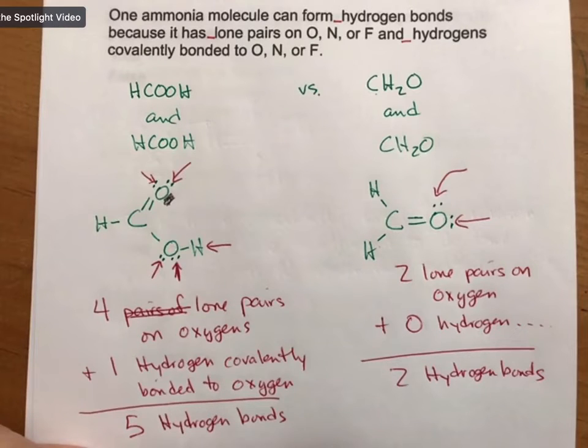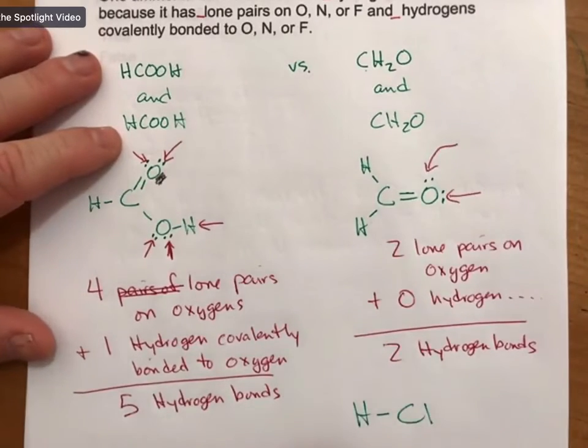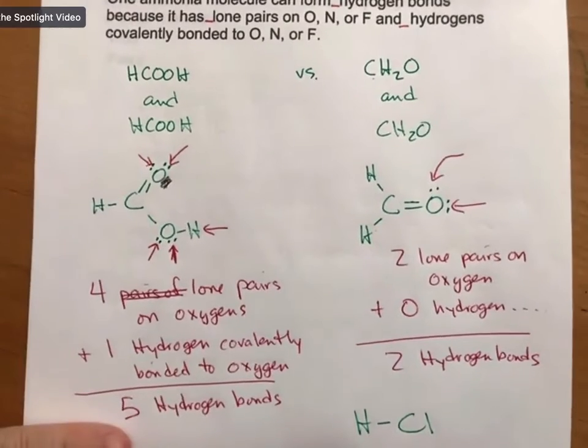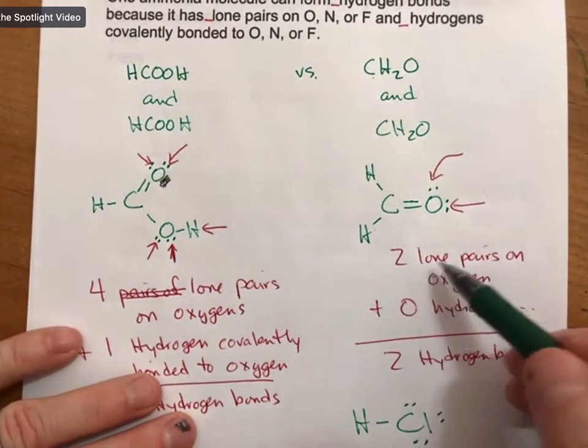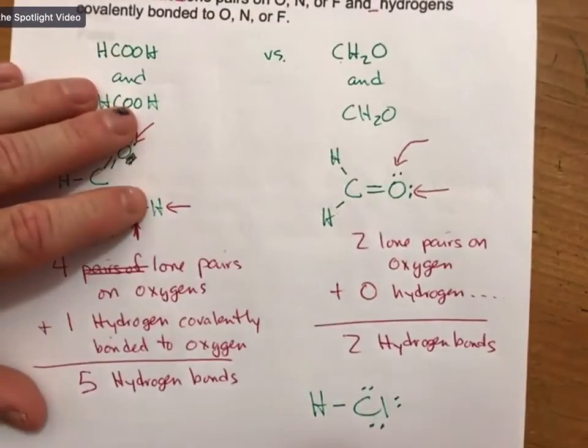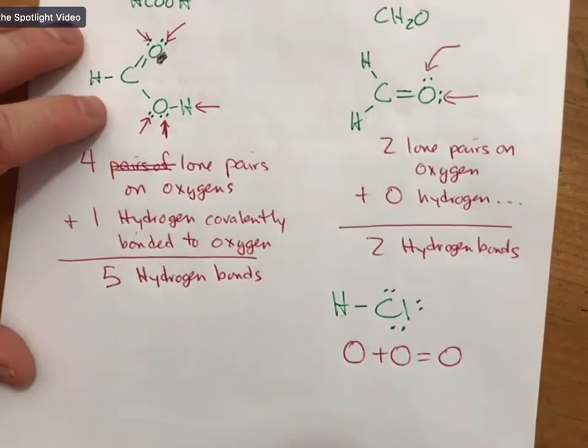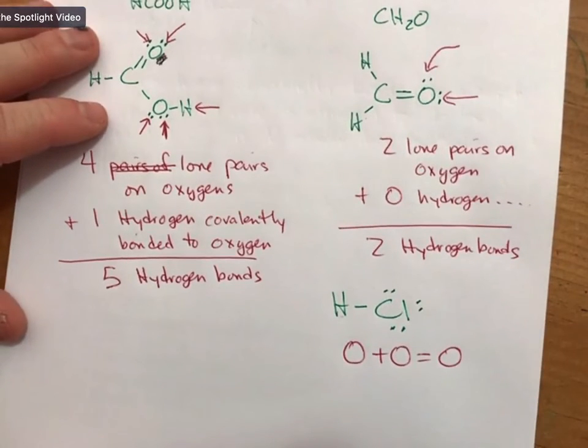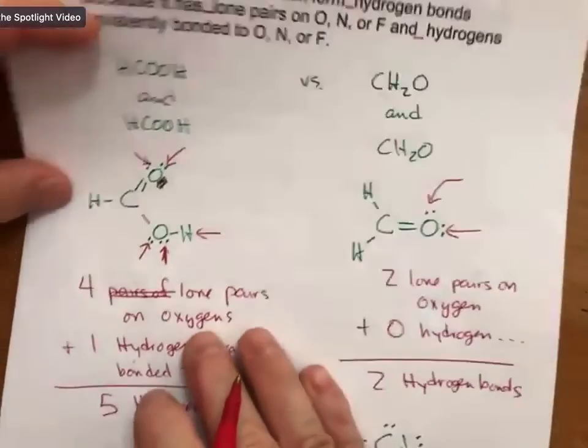And so you'll have to do it for ammonia or whatever molecule you pull up there. And as a third example, let me actually do HCl. HCl has, and I guess I should draw its Lewis structure here, HCl has zero lone pairs on oxygen, nitrogen, or fluorine. And zero hydrogens covalently bonded to oxygen, nitrogen, or fluorine. So the calculation would go zero plus zero equals zero for HCl. Any questions about any of these examples or a separate one?